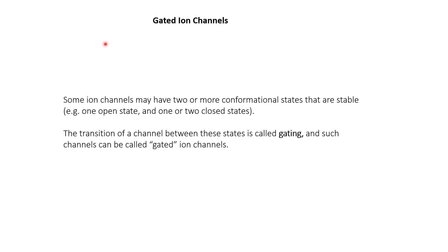Another important property of ion channels for the generation of action potentials is that channels can be gated. This means the channels may exist in different stable states — an open state or a closed state — and can transition between them. This process is known as gating, and channels with this property are called gated ion channels. Not all channels are gated: leakage channels such as some sodium, potassium, and chloride channels are always open and are non-gated or passive channels. Gated ion channels play an important role in neural activity and in determining the responses of neurons to various inputs.